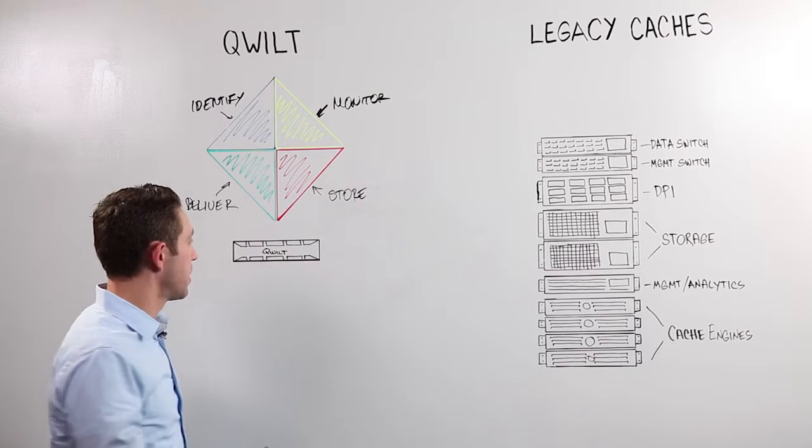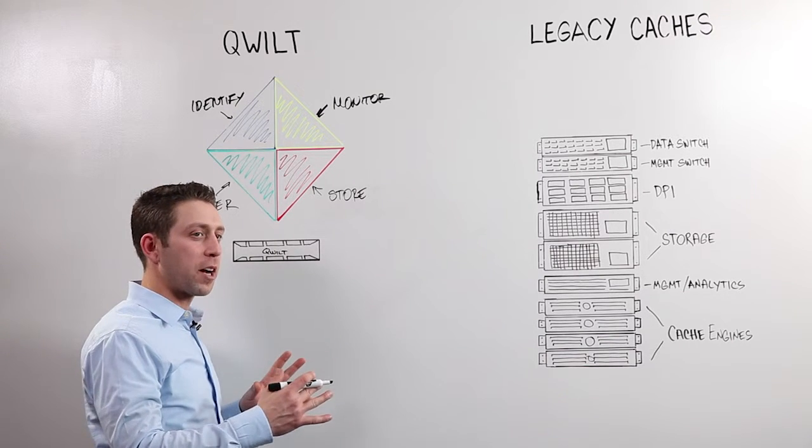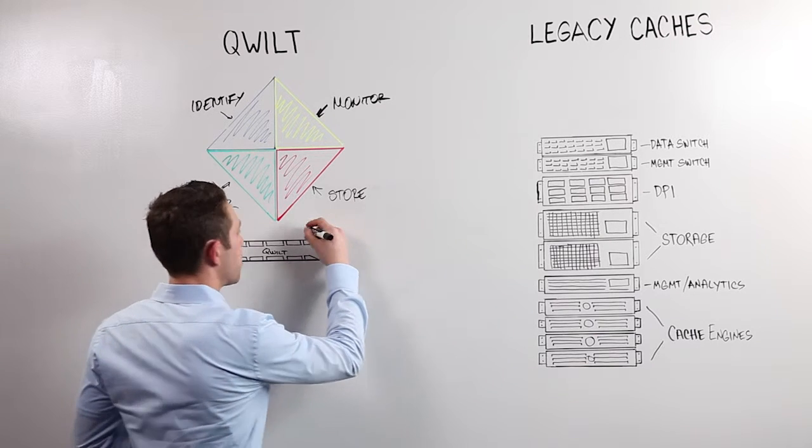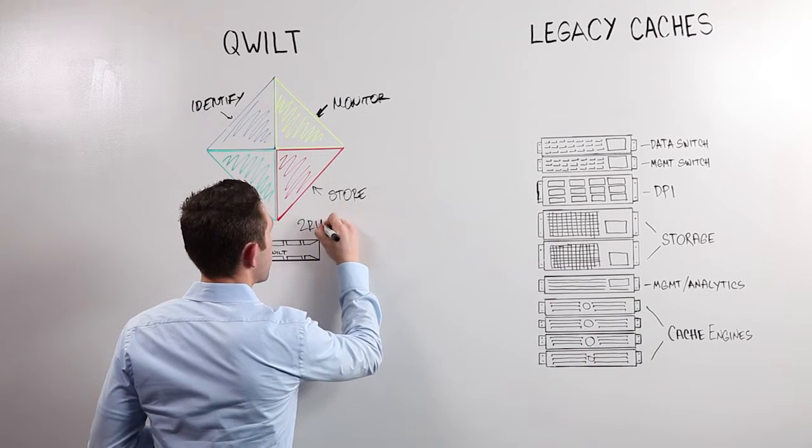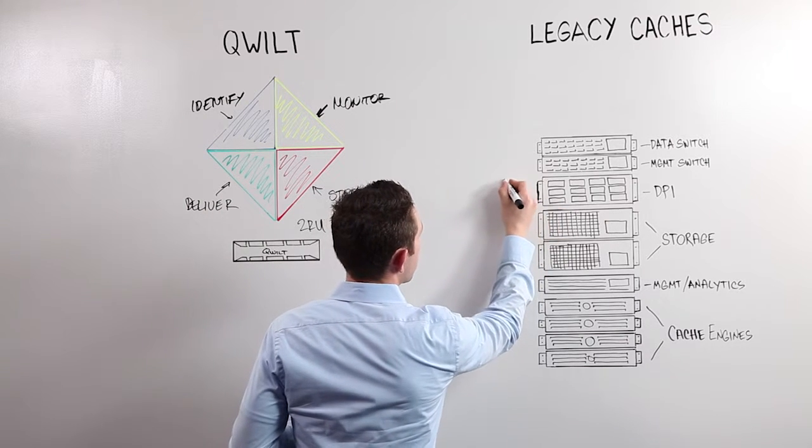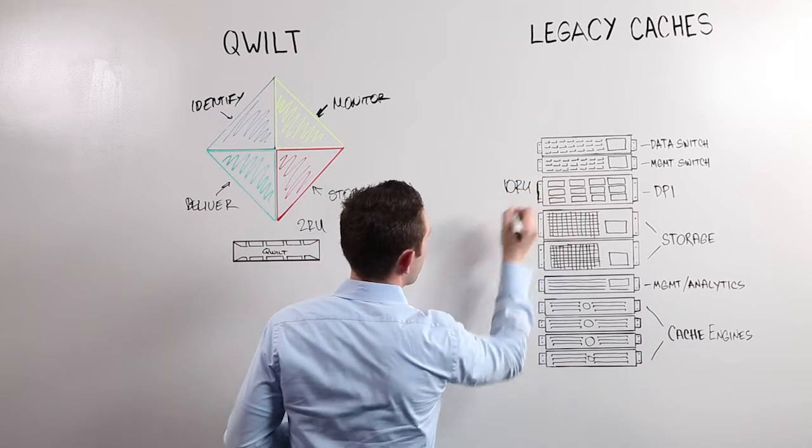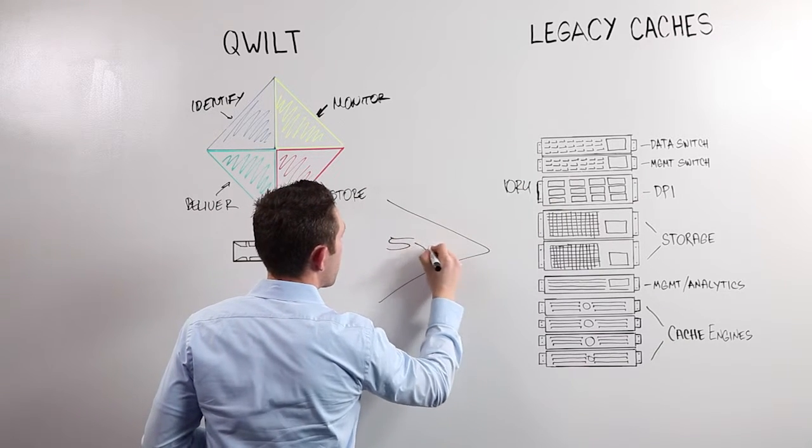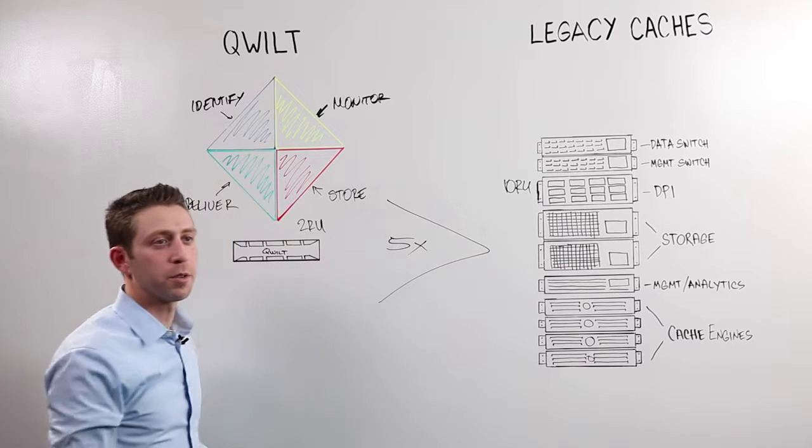The result is a powerful compact form factor designed specifically for the edge deployment in a carrier network. The QB series can do more in a 2RU device than a legacy caching system can do in a 10RU system. The end result is five times higher performance than any competing solution on the market today.